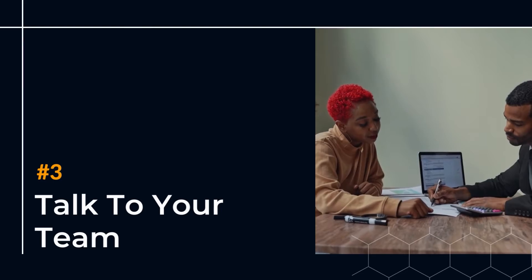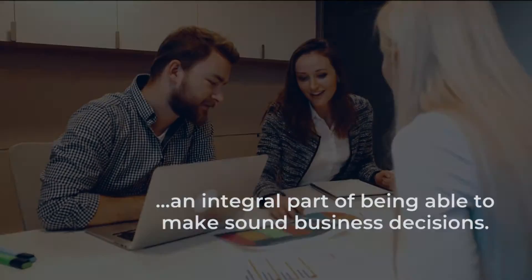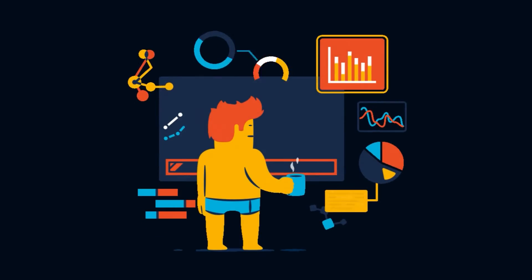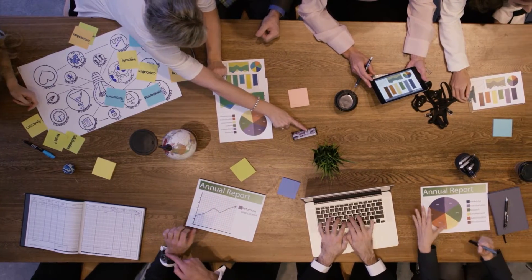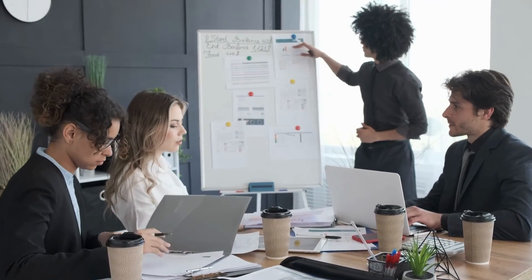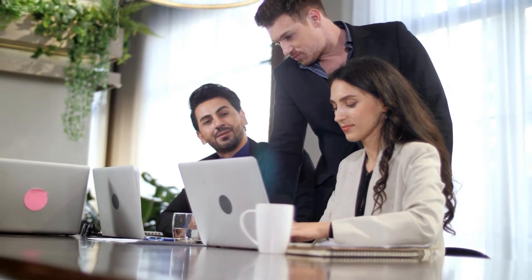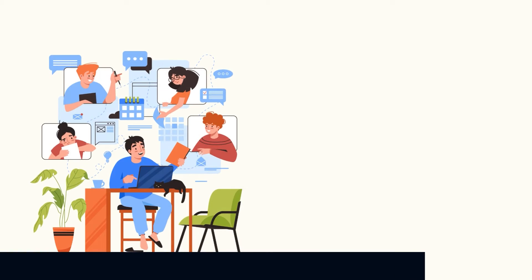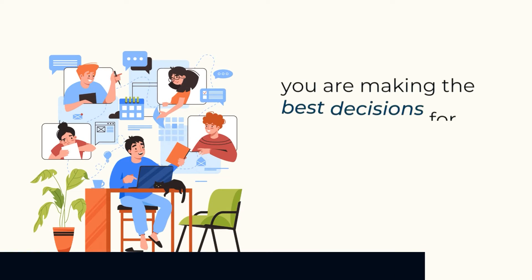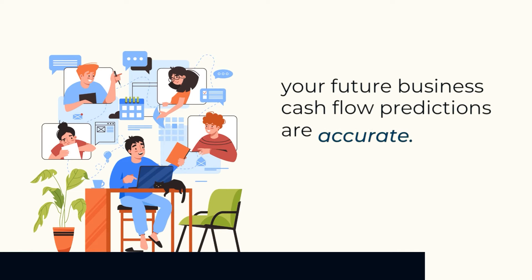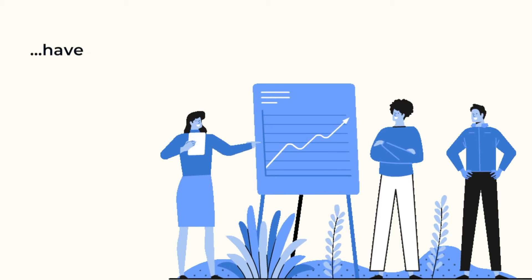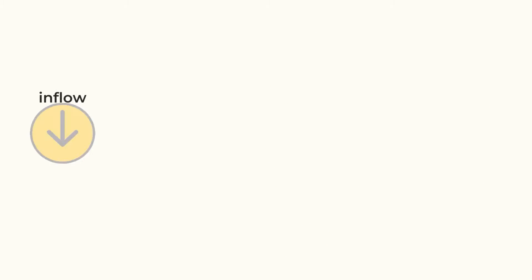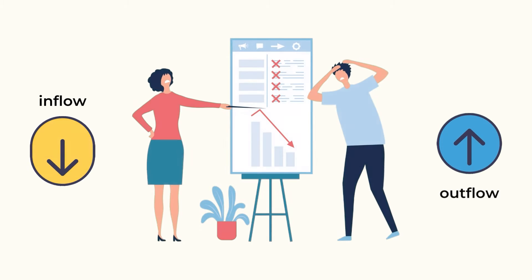Number 3: Talk to your team. Forecasting your business cash flow is an integral part of being able to make sound business decisions. However, forecasting in isolation from the rest of your team can be a disaster. It is important to communicate with your team so you can get their input on how the business is doing and what changes they think may need to be made to improve cash flow. This communication helps ensure that you are making the best decisions for the business and that your future cash flow predictions are accurate. Sales teams, for example, have ever-changing goalposts — without consultation, the inflow and outflow of their departments could be seriously overlooked.